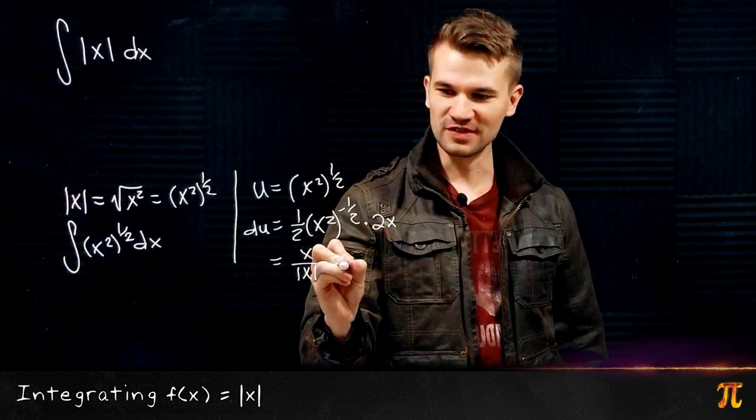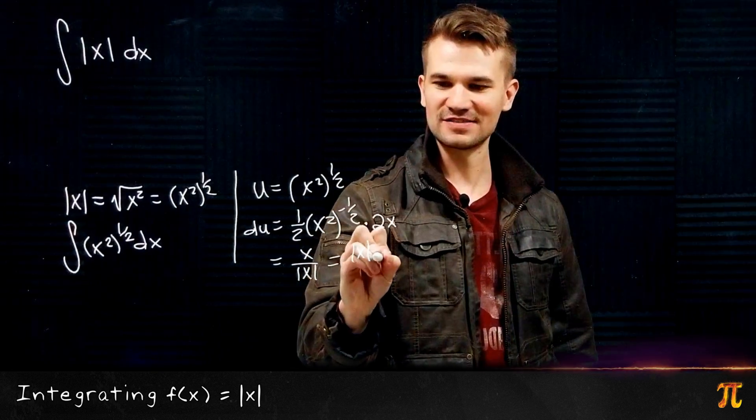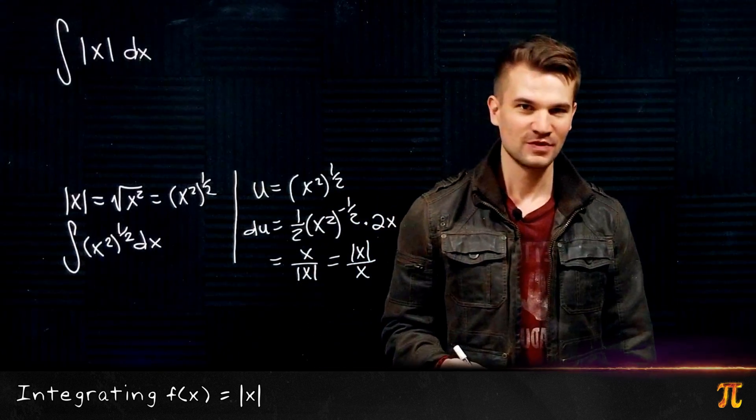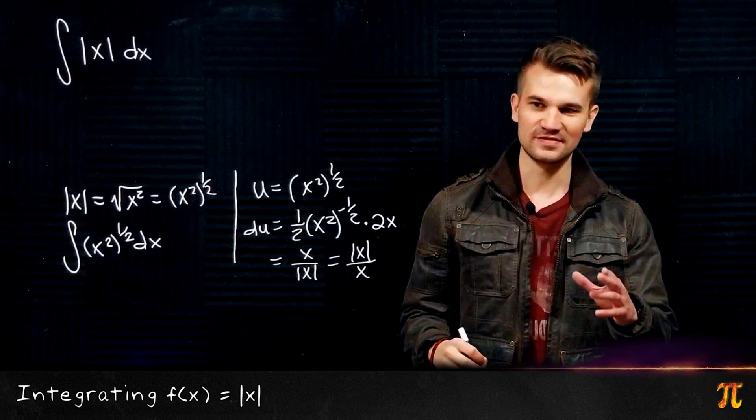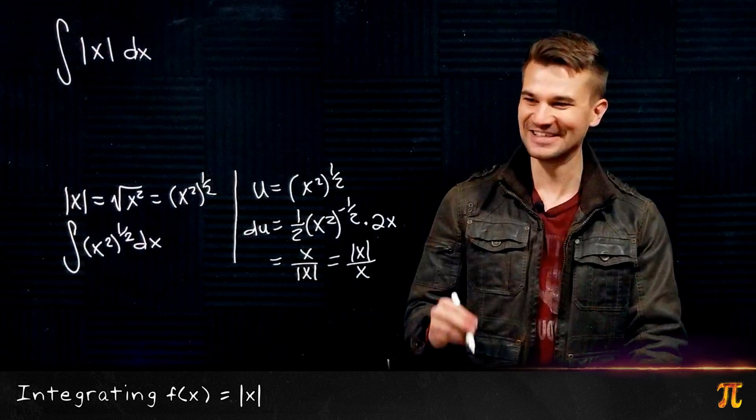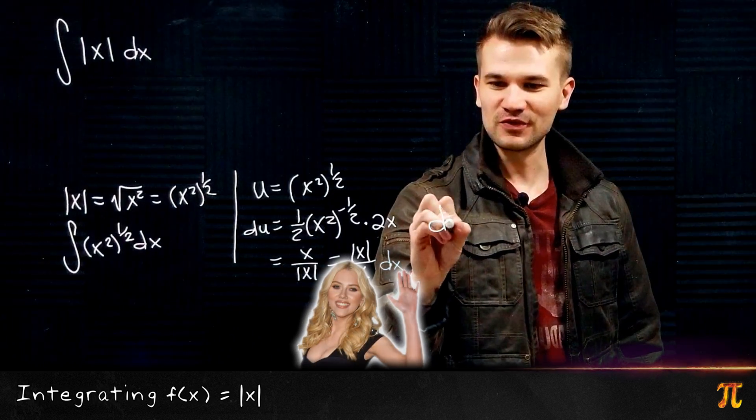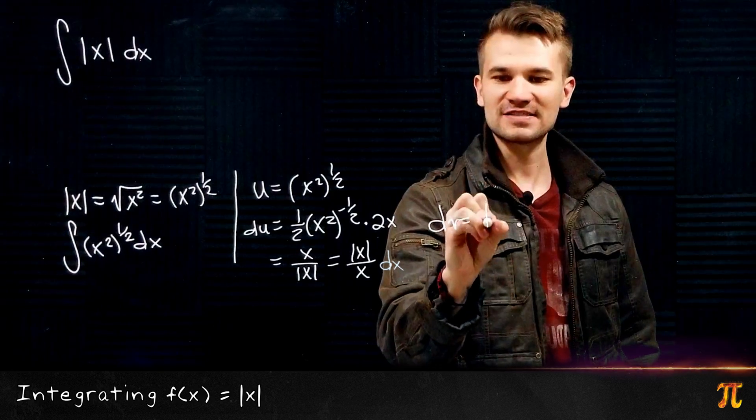And you can convince yourself that equivalently this can be written as |x|/x instead, which I'm going to do for reasons that will come up in a second. So dv we're going to let be dx, so that v is x.